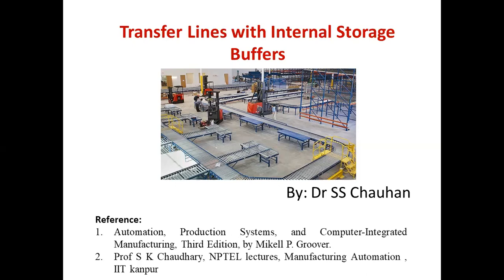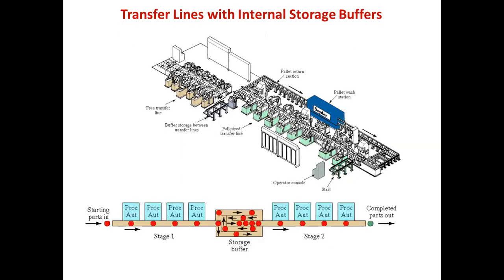What is the internal storage buffer and why is it required? In an automated production line when there is no internal storage of parts, the workstations are interdependent. When one station breaks down, all other stations on the line are affected — either immediately or after a few cycles. Workstations are then forced to stop for one of two reasons: starving of stations or blocking of stations.